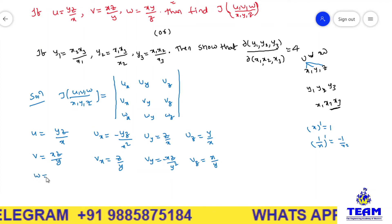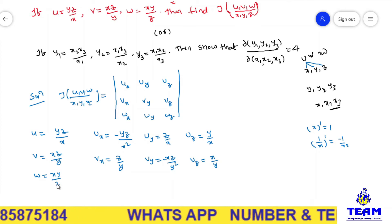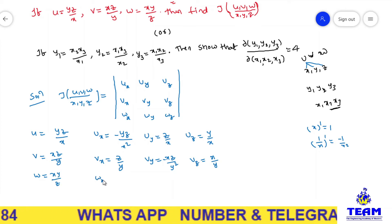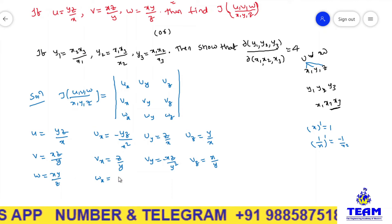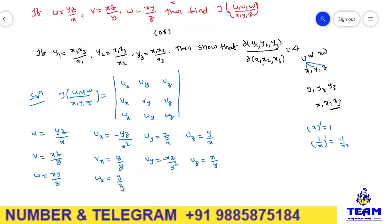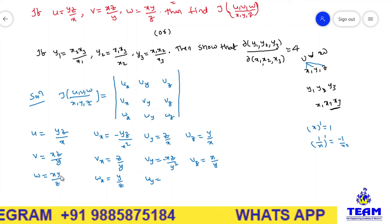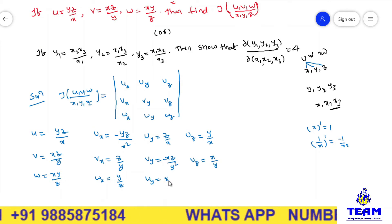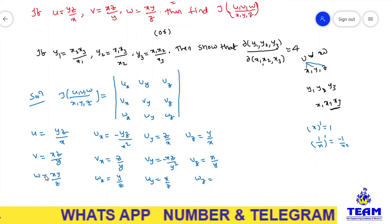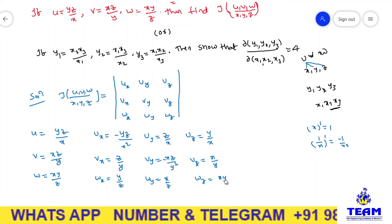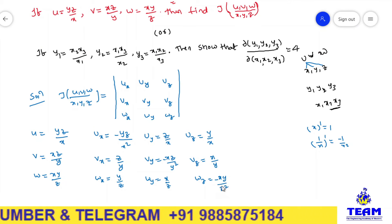For w = xy/z. Differentiating with respect to x: x is in the numerator, y/z is independent, so wx = y/z. For wy: y is in the numerator, x/z is independent, so wy = x/z. For wz: xy is in the numerator and independent of z, so the derivative of 1/z gives wz = −xy/z².